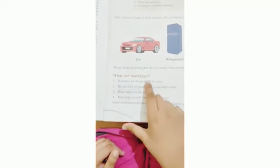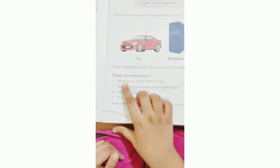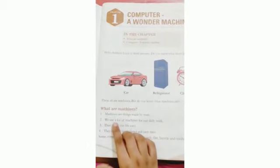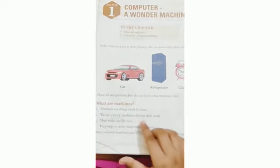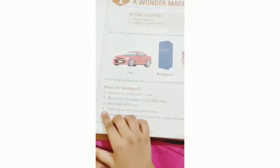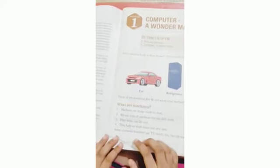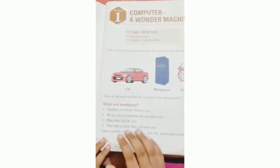What are machines. Number one: Machines are things made by men. Number two: We use a lot of machines for our daily work. Number three: They make our life easy. Number four: They help us work faster and save time. इसका मतलब क्या हुआ? Machine किस ने बनाया है? Machines are things made by men ने बनाया है. इसका मतलब machine हम लोगों ने बनाया है. हमारा machine हमारा कांग जल्दी करता है.